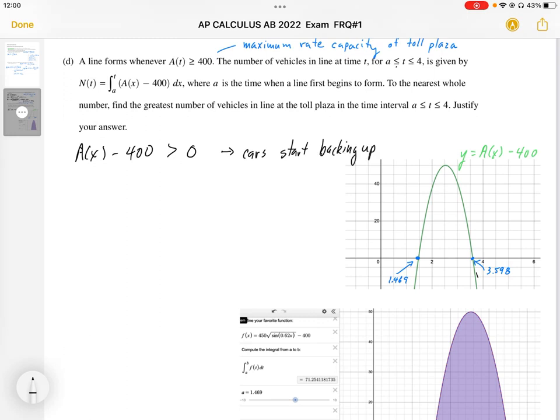So if that's the case, then the area above the curve represents the total number of cars backed up. That represents the maximum number of cars, because after that, we'll start getting rid of some of those cars that are backed up in line.